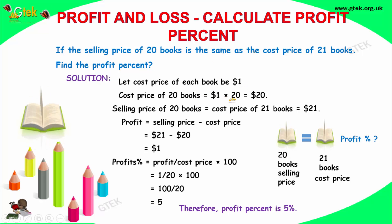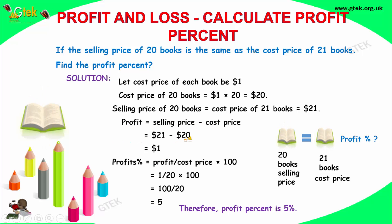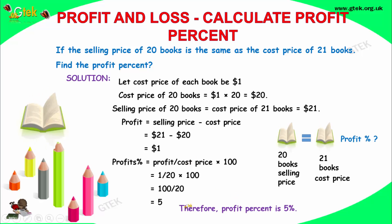$1 multiplied by 20 equals $20 — that's the cost price of 20 books. The selling price of 20 books equals the cost price of 21 books, which is $21. Profit is selling price minus cost price: 21 minus 20 equals $1. Profit percentage is 1 divided by 20 multiplied by 100 — you get 5%. The profit percentage is 5%.